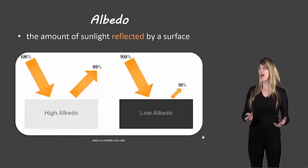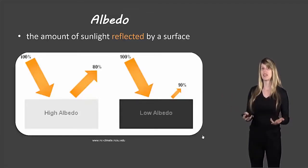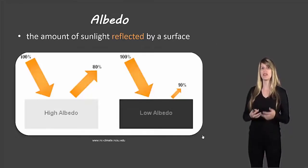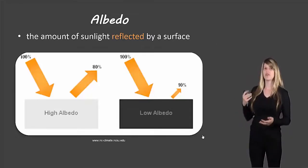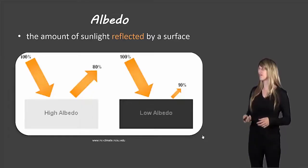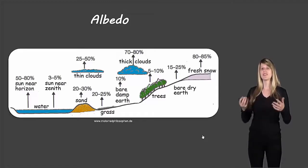First of all, albedo is the amount of sunlight reflected by a surface. If we look at the picture on the left, we have something that's light colored. You can see from the thickness of the arrow that a lot of the light is reflected, so it has a high albedo. On the right, there's something dark colored, and you can see from the size of the arrows that most of it is being absorbed and only a little bit is reflected, so it has a low albedo.